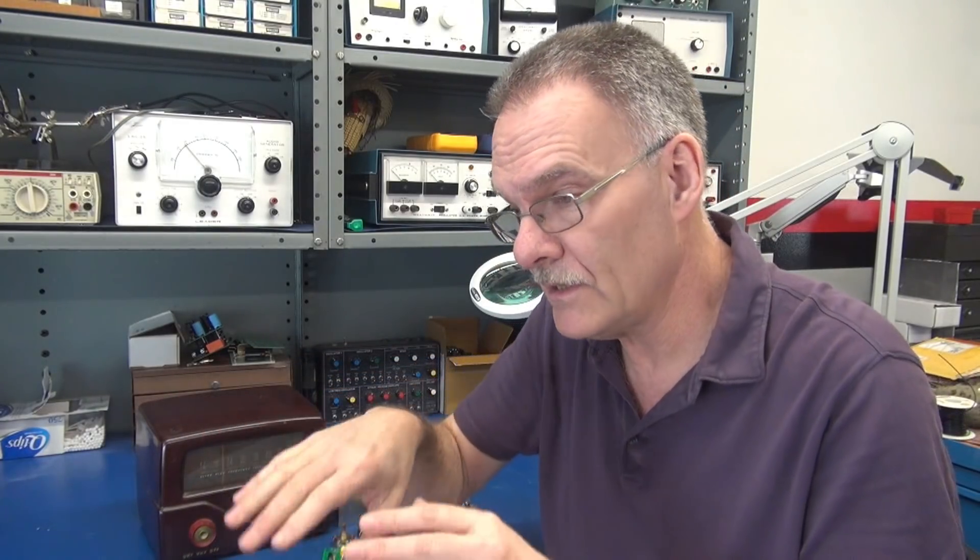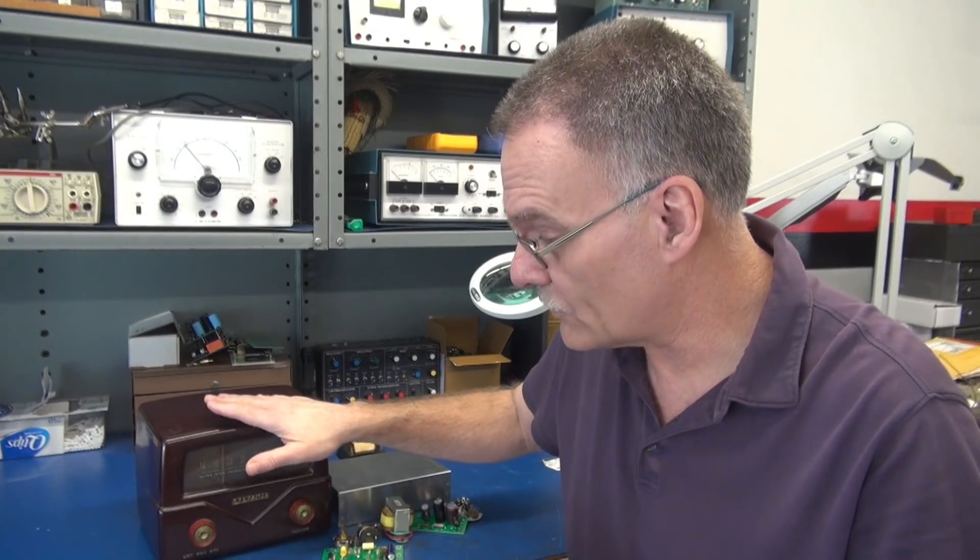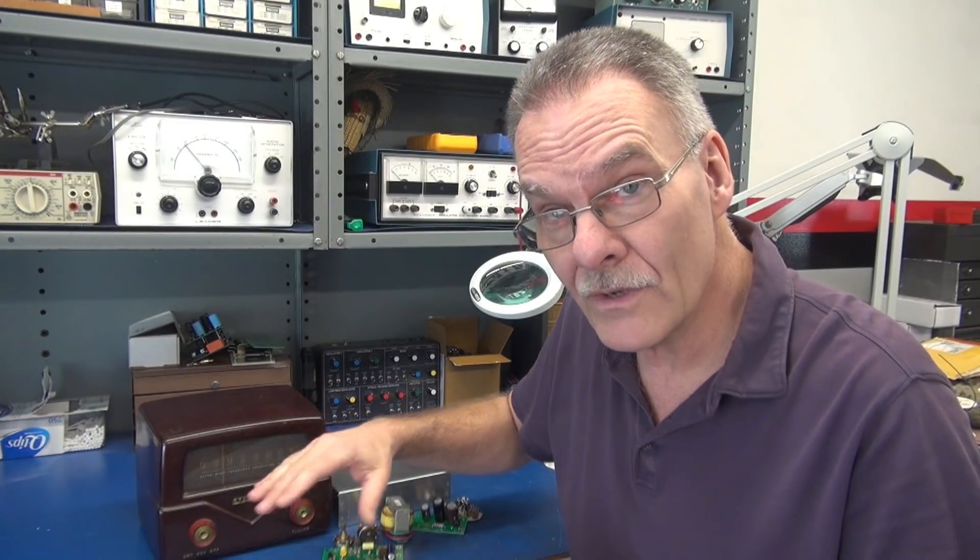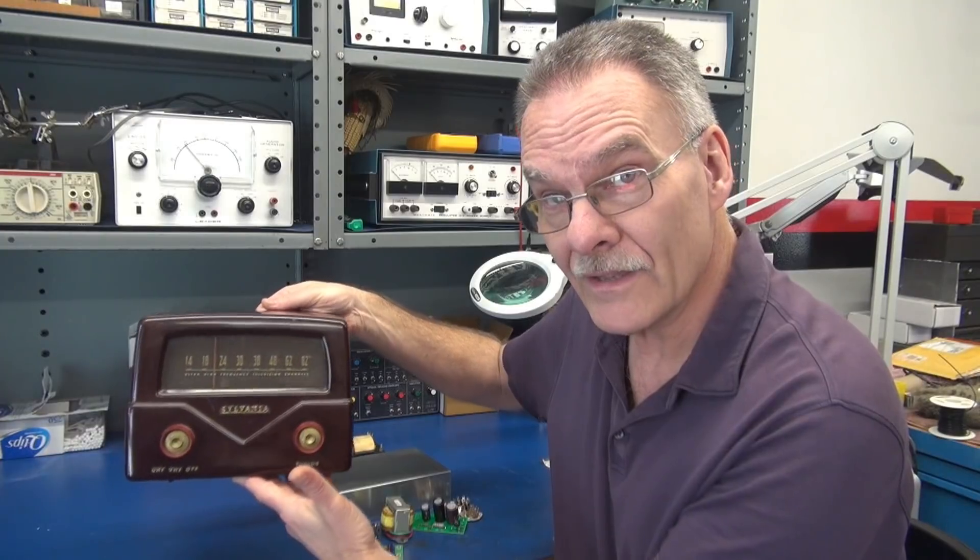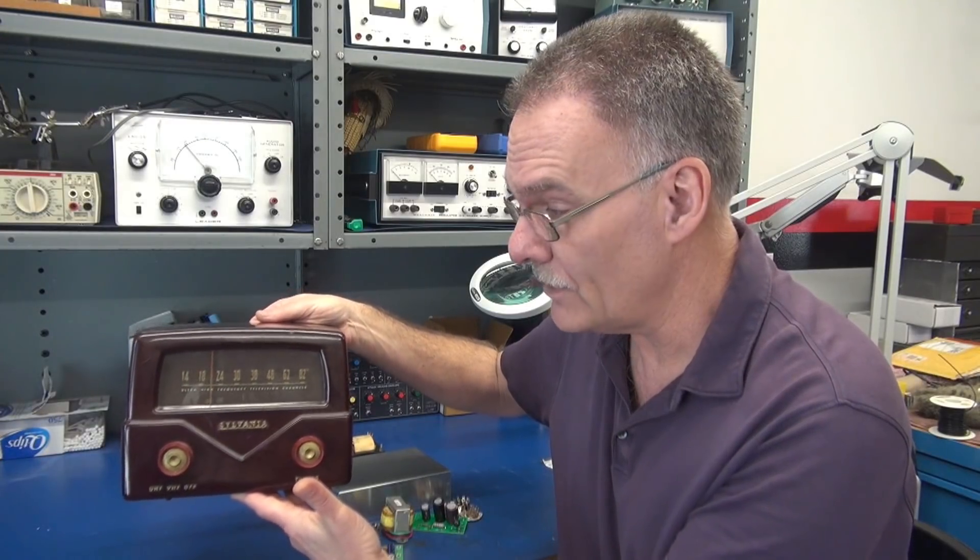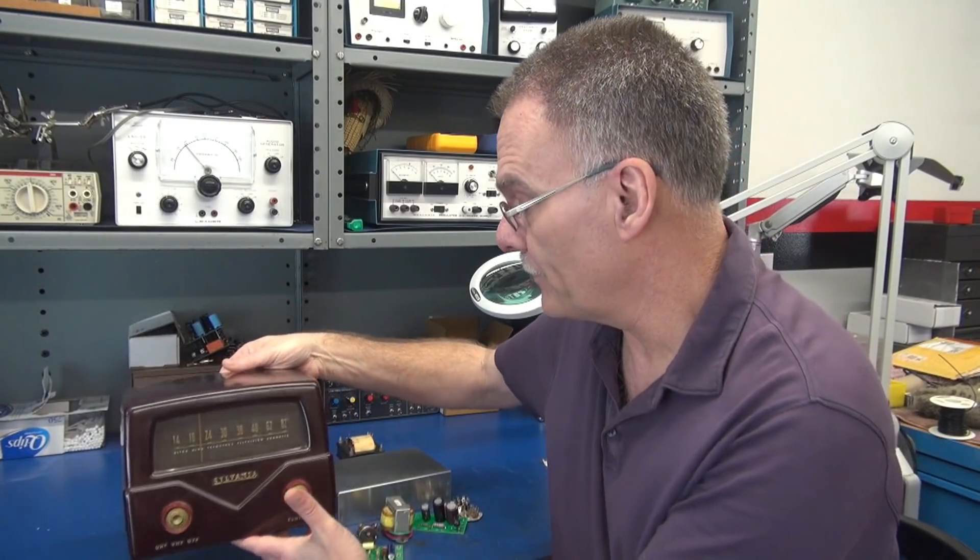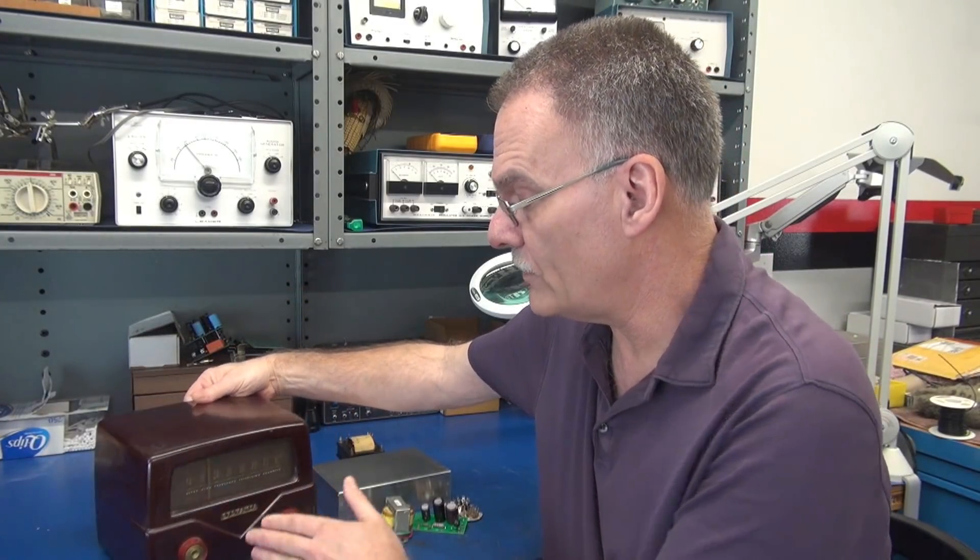It was for televisions back in the 50s when they didn't have the UHF tuner, only VHF, so this would convert it and give you those extra channels. The cabinets are bakelite and they're gorgeous and they're just the right size to build a small practice amp in.